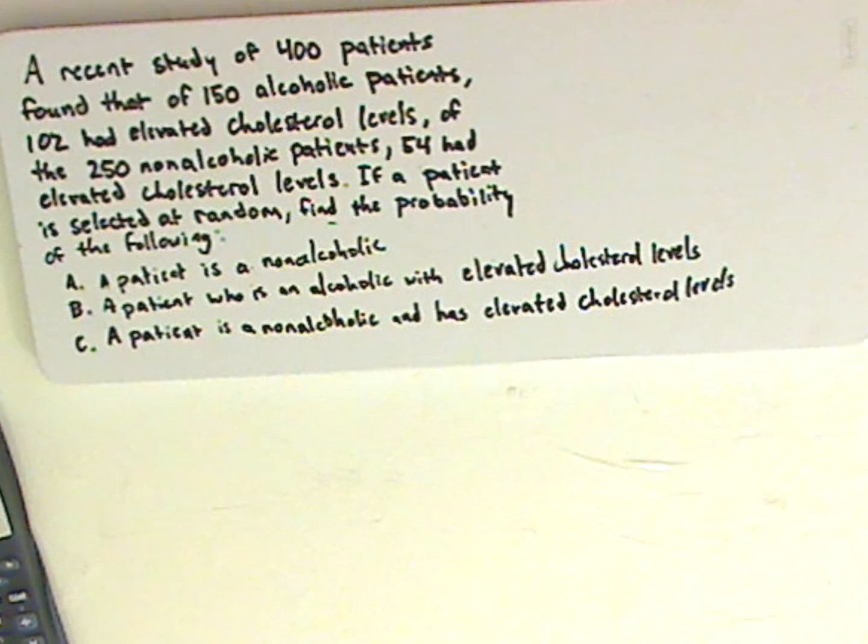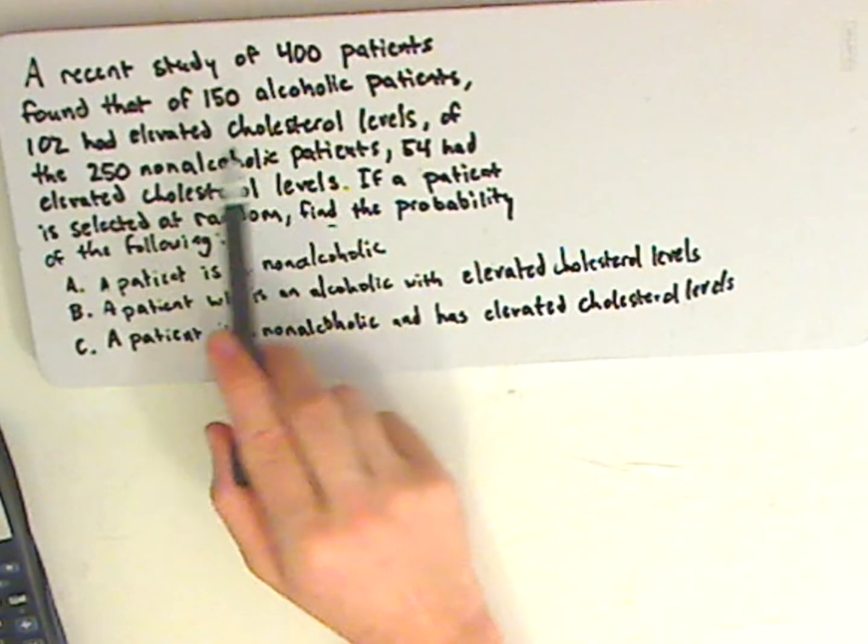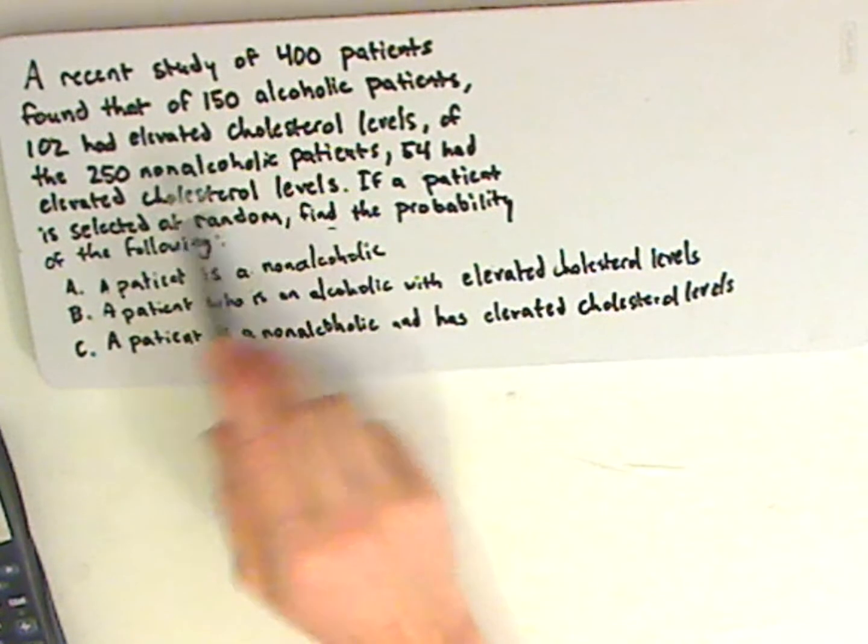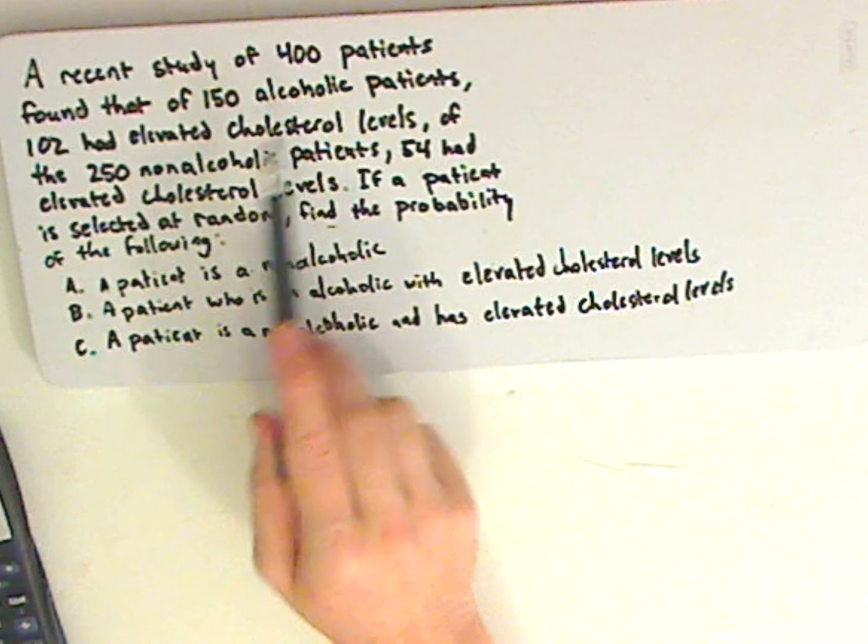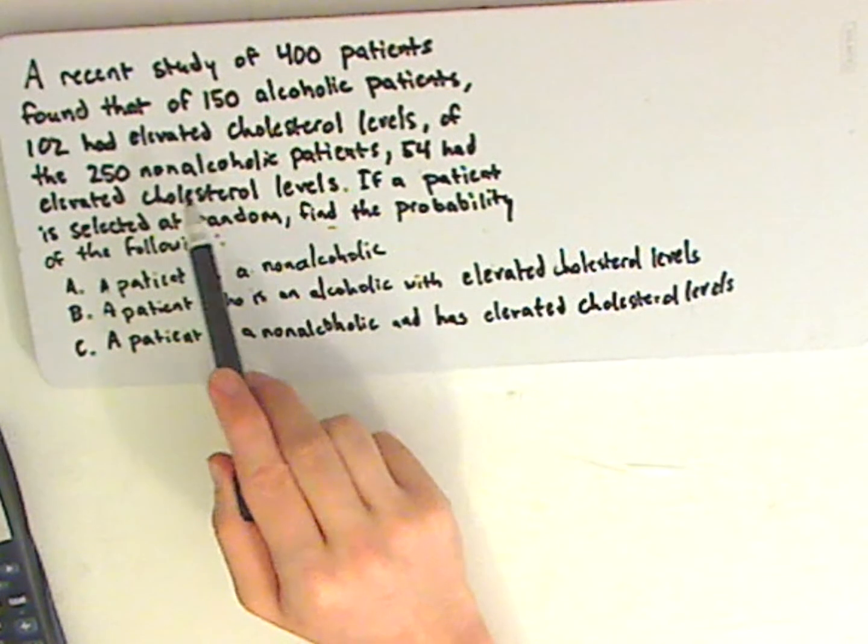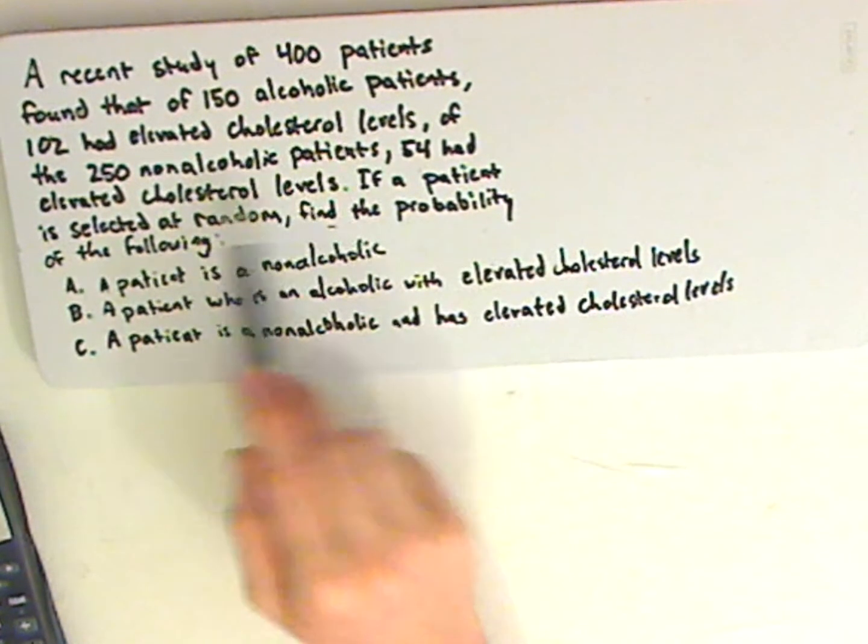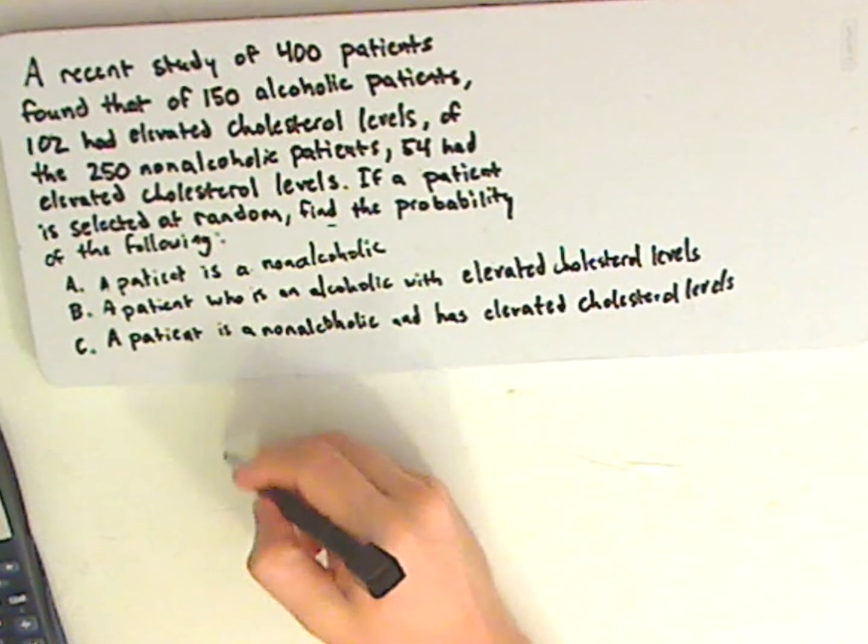Alright, the wording might be slightly confusing. Now, with something like this, where you have a total of 400 patients, and the patients are separating into two groups, alcoholic and non-alcoholic, and then within that you have elevated cholesterol levels. So, make a little table.